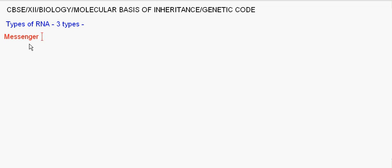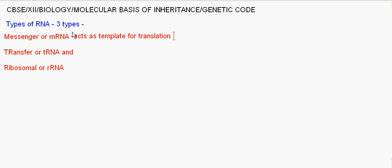From the terms only it's easy to understand. Messenger RNA means it carries message. How it carries message? It acts as template for protein synthesis or translation. What does it mean? The base sequence or nucleotide sequence in mRNA is copied to form the amino acid, to form polypeptide chain in protein.